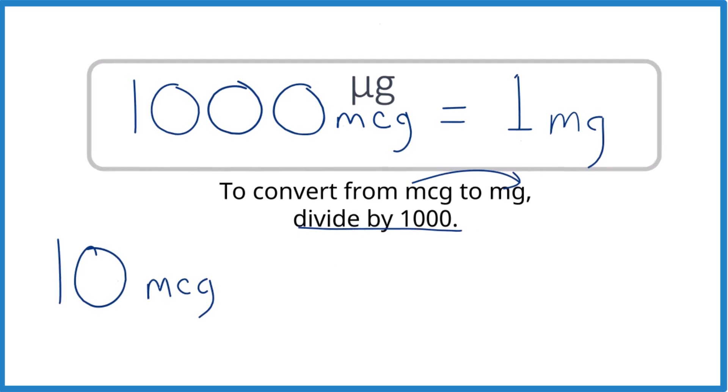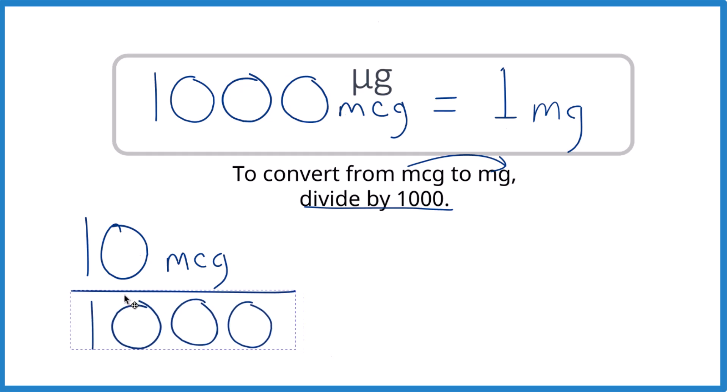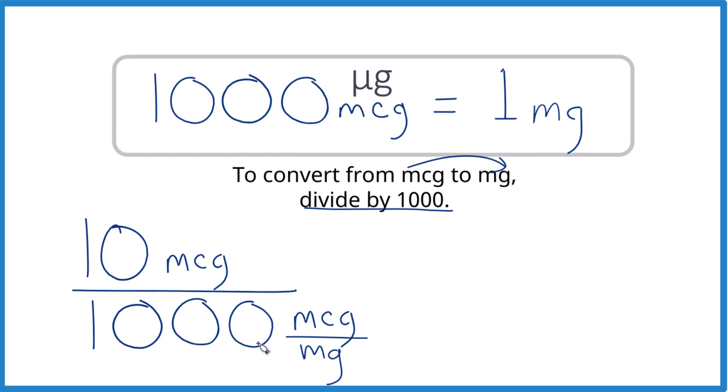So we have our 10 micrograms, we divide that by 1000. But remember there's 1000 micrograms in 1 milligram, so 1000 micrograms per milligram like that, so we have our units straight.